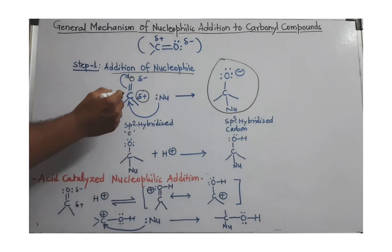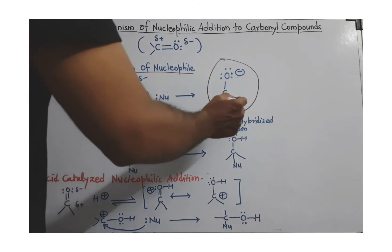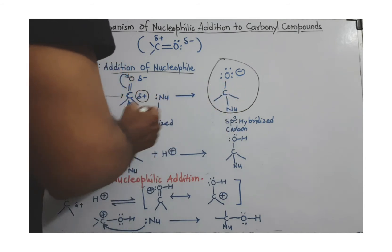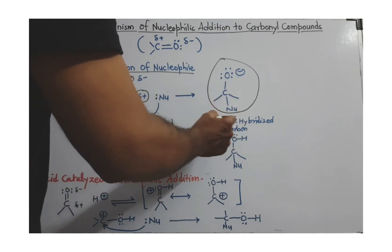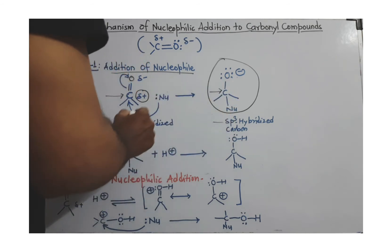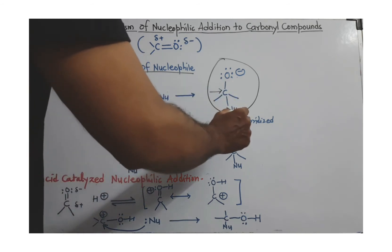If you look at the hybridization of this carbon, it is sp2 hybridized with trigonal planar geometry. But after addition of nucleophile, the geometry converts from trigonal planar to tetrahedral, and the hybridization of this carbonyl carbon changes from sp2 to sp3.